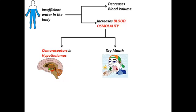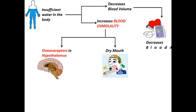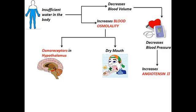As discussed previously, insufficient water in the body leads to a decrement in blood volume. Whenever blood volume decreases, blood pressure gradually decreases, and this leads to an increment in angiotensin 2 production in the blood. Angiotensin 2 is a hormone that maintains blood pressure by vasoconstriction, which means constriction of blood vessels. Whenever blood vessels are constricted, blood pressure increases.